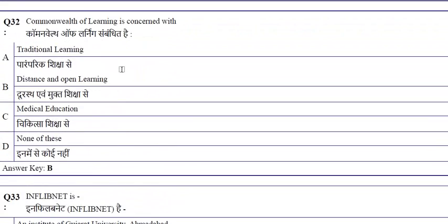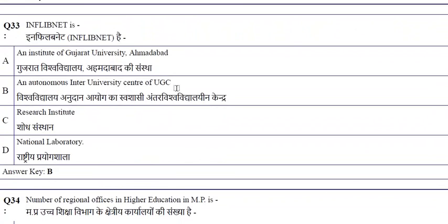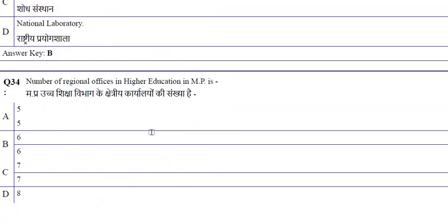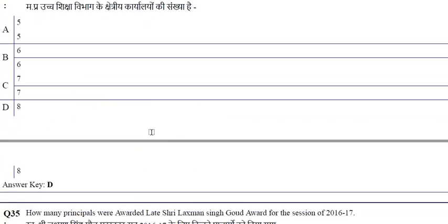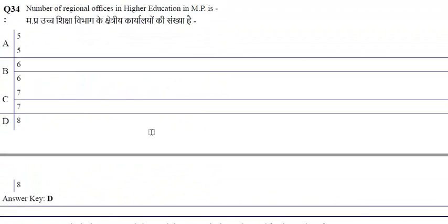Commonwealth of Learning is concerned with distance and open learning. Inflibnet is an autonomous center of UGC. The number of regional offices of Higher Education in Madhya Pradesh is 8.